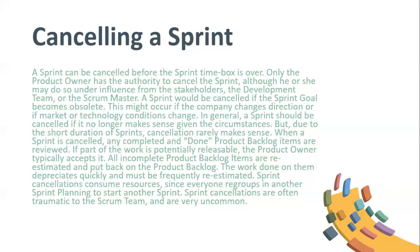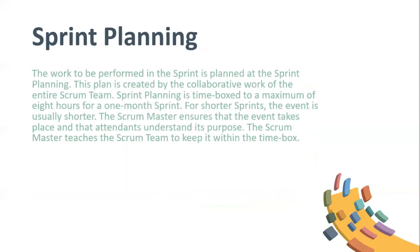Due to the short duration of sprints, cancellation rarely makes sense. When a sprint is cancelled, any completed and done product backlog items are reviewed. If part of the work is potentially releasable, the product owner typically accepts it. All incomplete product backlog items are re-estimated and put back on the product backlog. The work done on them depreciates quickly and must be frequently re-estimated. Sprint cancellations consume resources since everyone regroups in another sprint planning to start another sprint. Sprint cancellations are often traumatic to the Scrum team and are very uncommon.